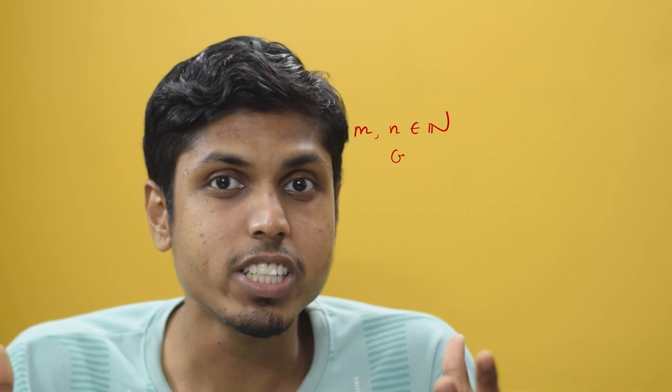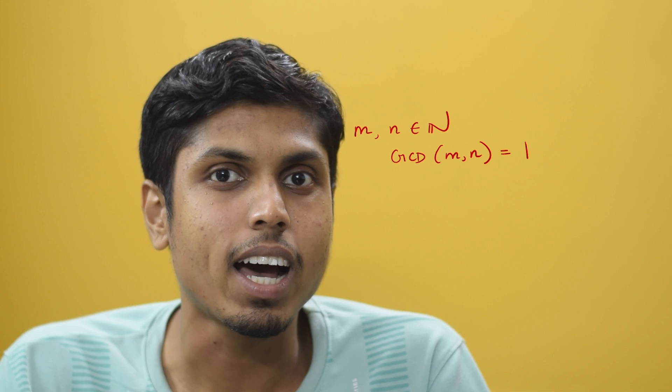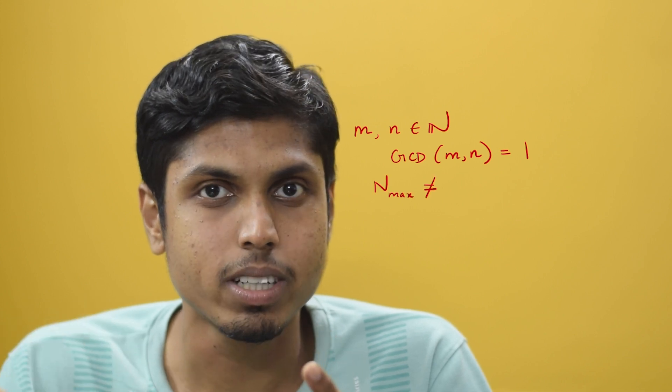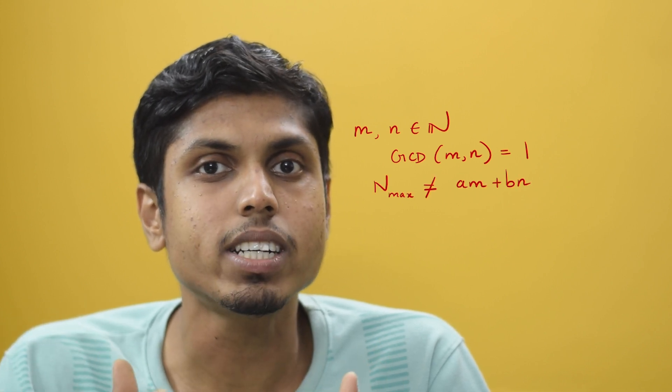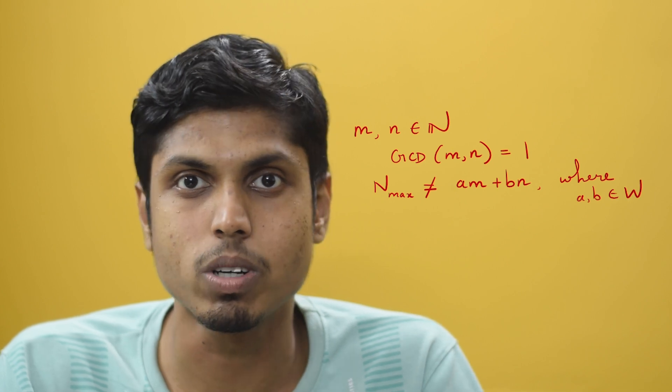Hello everyone, let's learn a fascinating idea in number theory called the Chicken Nugget Theorem. The name itself is appealing. You have two numbers which are co-prime to each other, and the question is: what is the largest possible number that cannot be represented as a linear combination of those two numbers? Let's learn it through an AMC problem — first solve it, extract the idea, and frame the theorem.